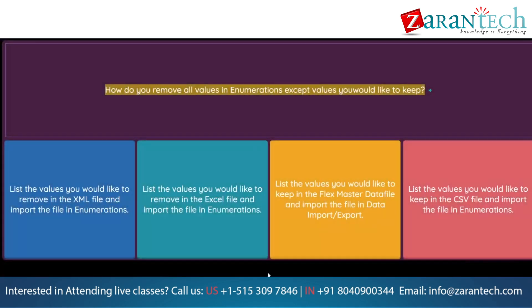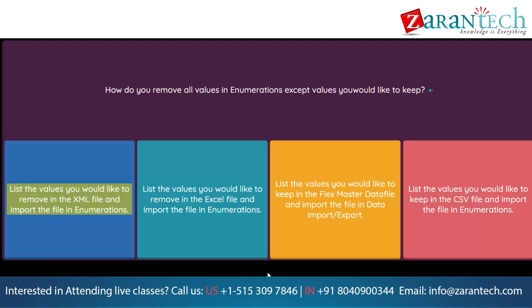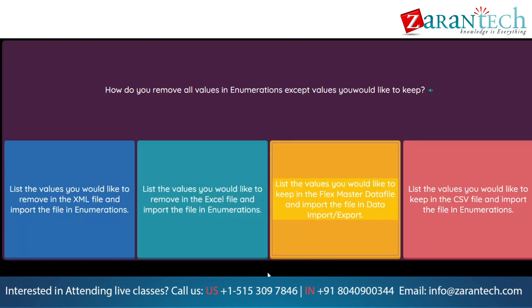Question: How do you remove all values in enumerations except values you would like to keep? Option 1: List the values you would like to remove in the XML file and import the file in enumerations. Option 2: List the values you would like to remove in the Excel file and import the file in enumerations. Option 3: List the values you would like to keep in the Flexmaster data file and import the file in data import/export. Option 4: List the values you would like to keep in the CSV file and import the file in enumerations.